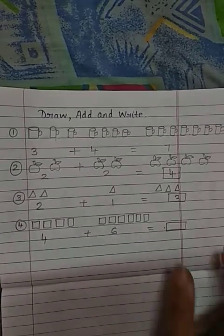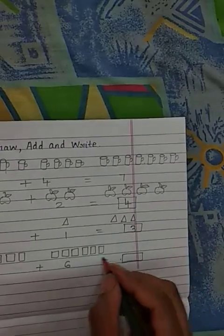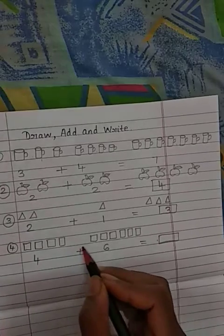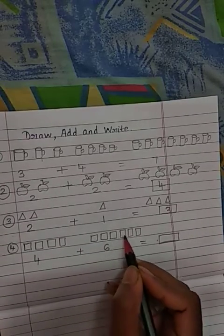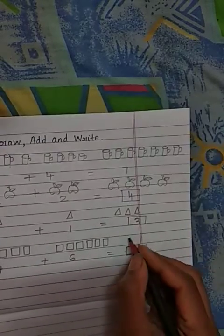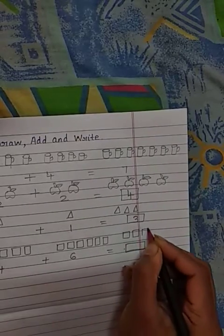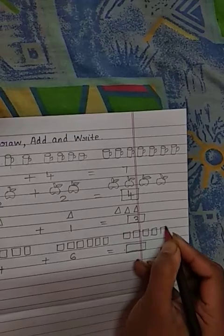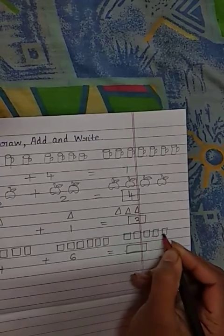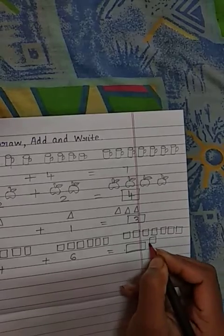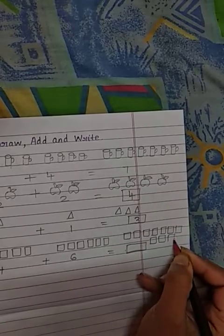Now again you need to draw here. That is count here. 1, 2, 3, 4, right? Then after 4, 5, 6, 7, 8, 9 and 10. So you need to draw here 10 squares. First we will draw. So 1, 2, 3, 4, 5, 6, 7, 8, 9 and 10.